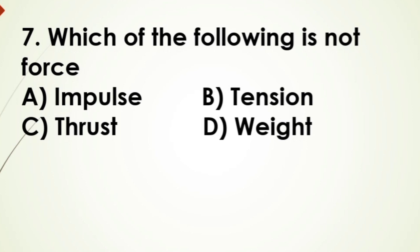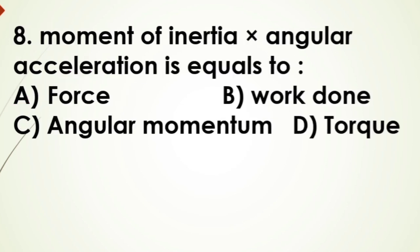Now seventh question: which of the following is not a force? - A) impulse, B) tension, C) thrust, D) weight. And the answer is impulse. Now eighth: moment of inertia multiplied by angular acceleration is equal to - A) force, B) work done, C) angular momentum, D) torque. And the answer is torque.